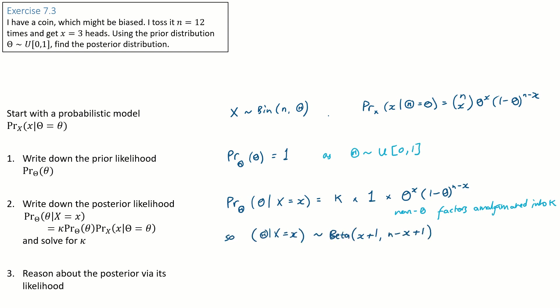Step two, use Bayes rule to find the posterior likelihood. The answer is some constant kappa times the prior likelihood for theta times the likelihood for the data set X that we wrote out above. We don't need to carry around the non-theta factors. We might as well just amalgamate them all into the constant kappa. And then we could use integration to find kappa, or if we're cleverer, we'll spot that this looks like a standard density function that we know and love.